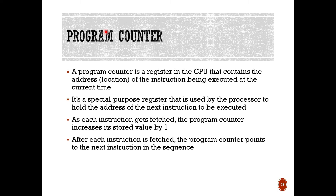Before we start on that, I want to introduce the program counter. It's a register in the CPU and it's very important — it holds the address of the next instruction that we need. The program counter contains the address of the instruction being executed at the current time. It's a special-purpose register used by the processor to hold the address of the next instruction, and as each instruction gets fetched, the program counter increases its stored value by one. When the computer starts, it's at value zero and it continues until the computer is turned off.